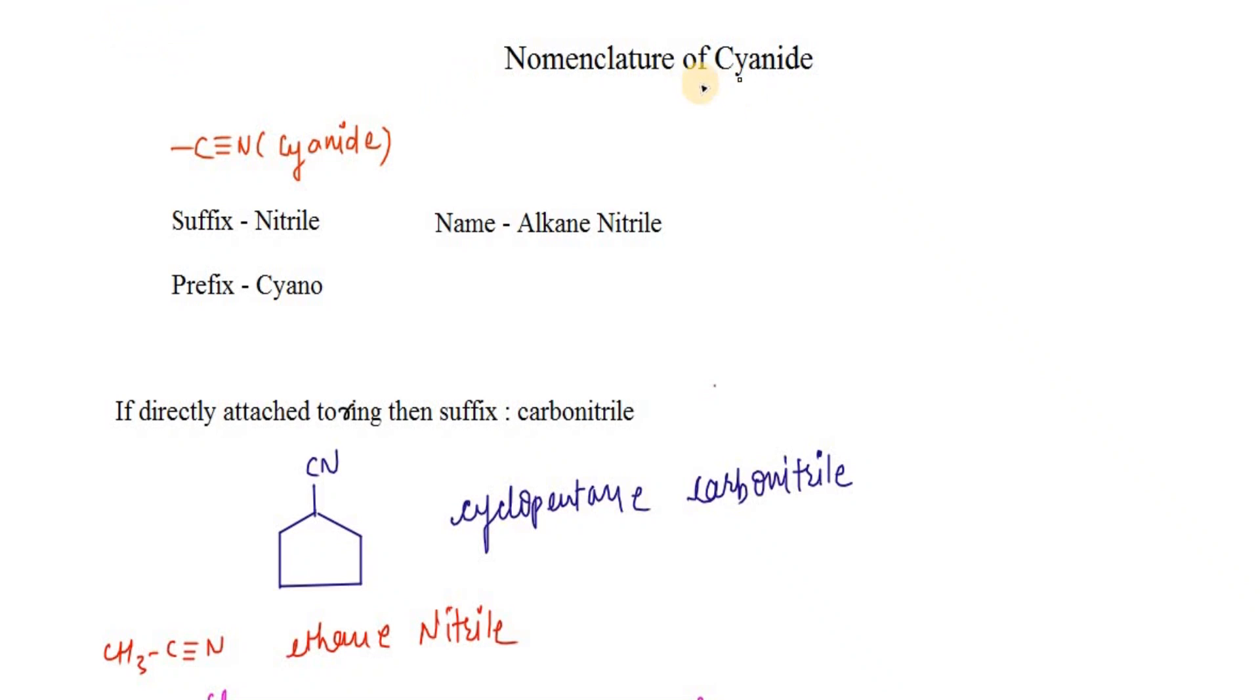Today we're going to learn how to name a cyanide. So what actually is a cyanide? C triple bond N, nitrogen connected to carbon with a triple bond. Terminal should be there. That is cyanide.